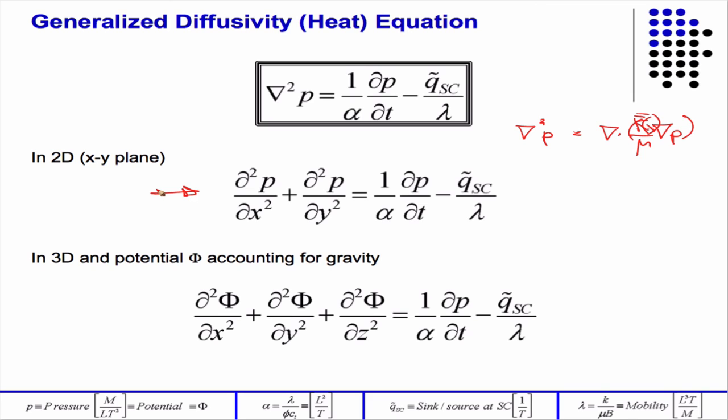In 3D, we have this equation, and notice that this P in the 2D equation has been replaced by phi. And what phi is, it's like a potential that includes gravity. So, it would be P minus rho g z. Because in 3D, there's no way to avoid gravity. It can never take a slice of a 3D reservoir and not have gravity. And we may choose to ignore it, but in general, it has to be there in the equation.